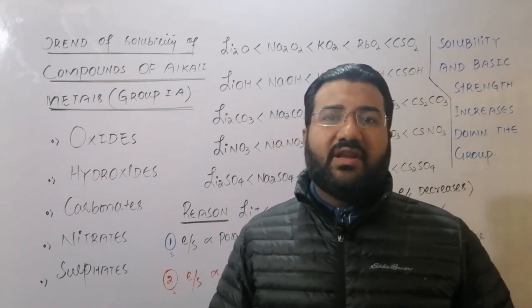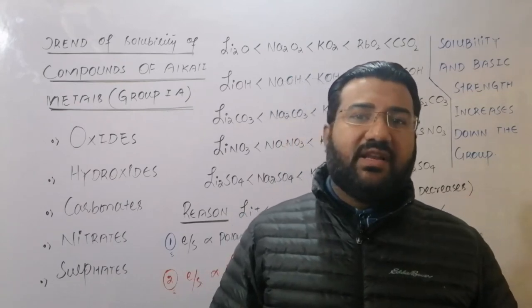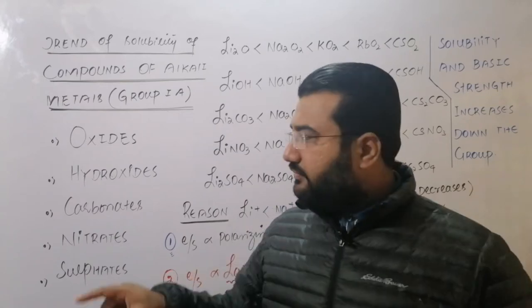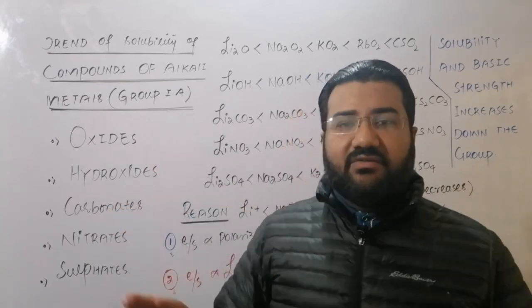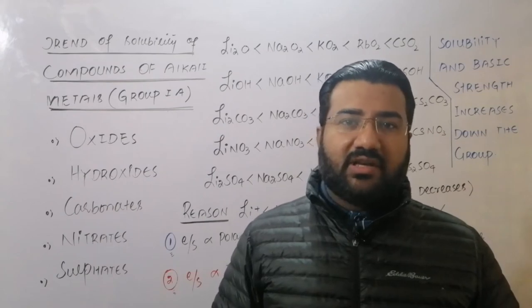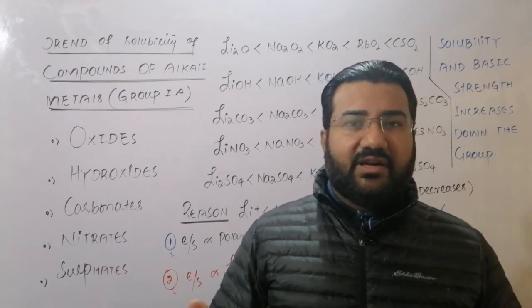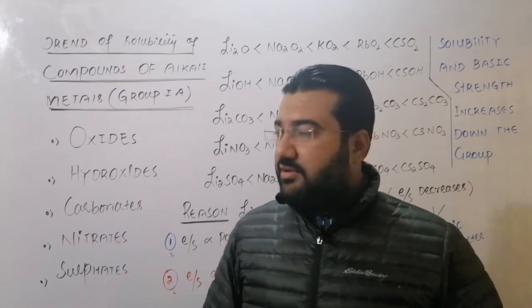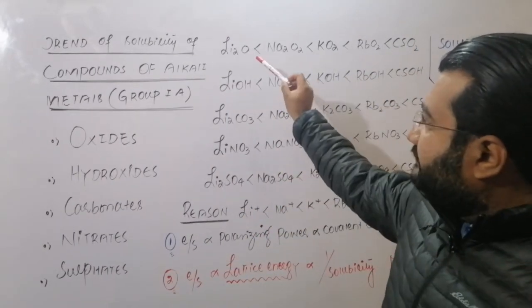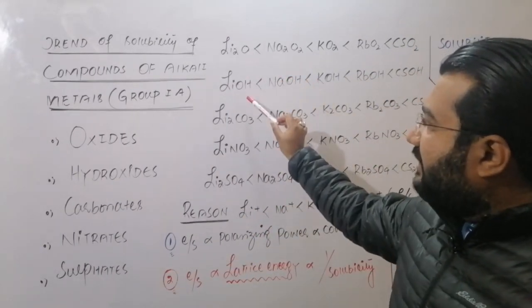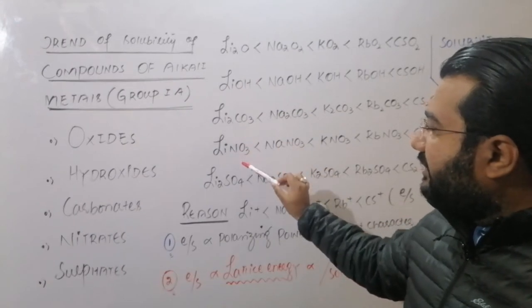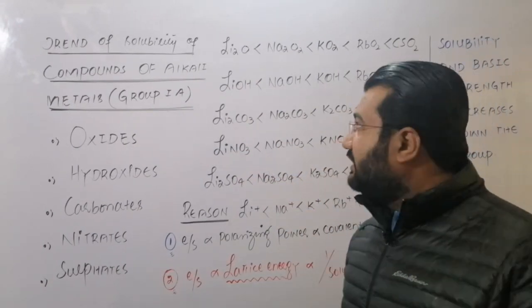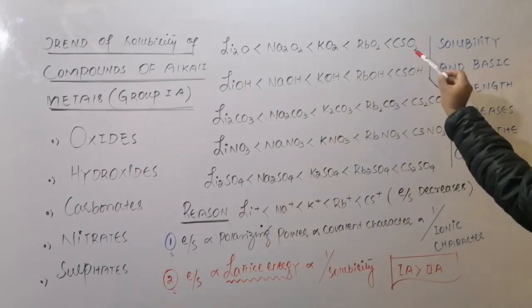First, keep in mind that the solubility of all these compounds increases when we move from top to bottom in Group 1A. So the compounds of lithium — whether lithium oxide, hydroxide, carbonate, nitrate, or sulfate — are least soluble in water.